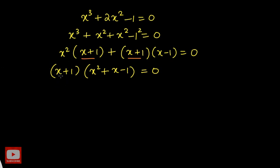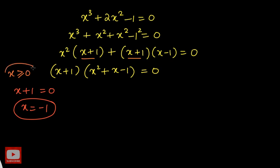Setting x + 1 = 0 gives x = −1. However, this does not satisfy our domain condition — we established that x must be greater than or equal to zero because the square root on the left side must be positive. So x = −1 is immediately rejected. Our possible solution must come from the remaining factor x² + x − 1 = 0.